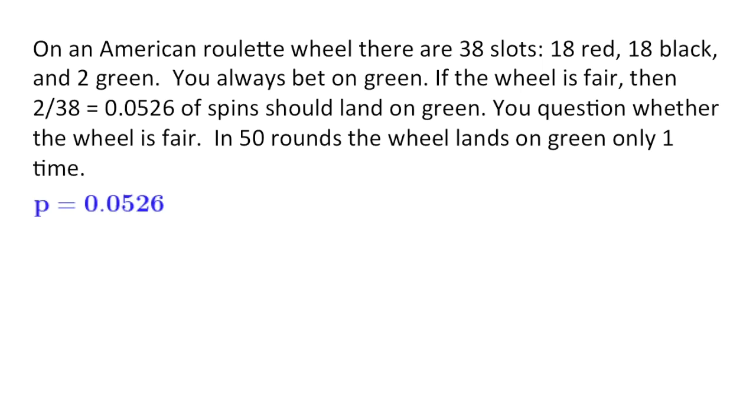From this scenario, we know that P, or the population proportion, equals 0.0526. In other words, if the wheel is fair, then in the population of all possible spins, 0.0526 should be green. N equals 50, because you're playing 50 rounds. And P hat, the observed sample proportion, is 1 over 50, because 1 out of your 50 rounds resulted in green. So, P hat equals 0.02.